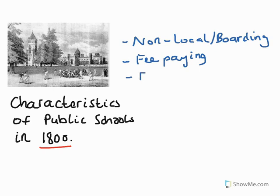On top of that, they were endowed — endowments in the form of financial investment from certain individuals and organisations. But they were also endowed with significant grounds in rural locations, allowing for the development of opulent facilities. The schools were run by a group of what we call trustees — in today's terms, in state education, we'd call them the Board of Governors. The trustees managed the strategic direction of the school, and most importantly, appointed the head teacher.